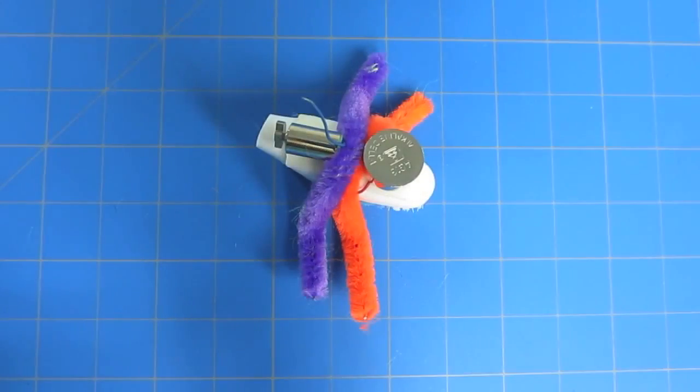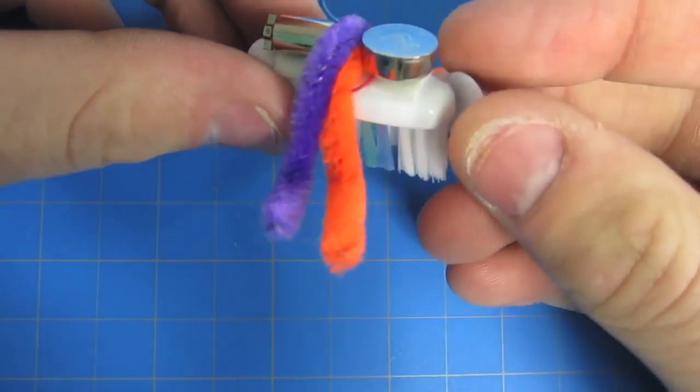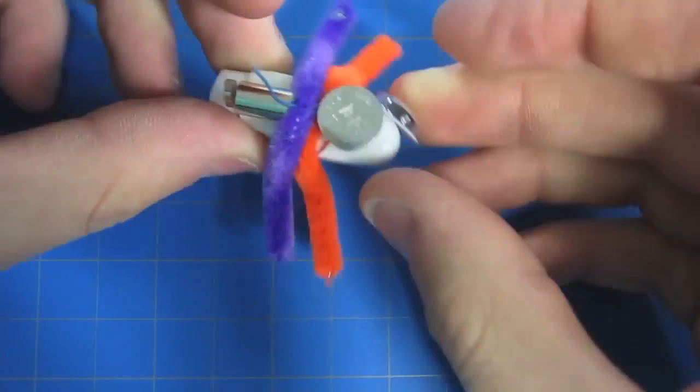Use the two googly eyes by peeling off the back protective layer and using the sticky side to stick onto your bristlebot.